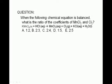Consider the following reaction of potassium permanganate with hydrochloric acid: potassium permanganate plus hydrochloric acid yields manganese 2 chloride plus chlorine gas plus potassium chloride and water. When the chemical equation is balanced, what is the ratio of the coefficients of manganese 2 chloride and chlorine gas? Is it A, 1 to 2; B, 2 to 3; C, 2 to 4; D, 1 to 5; or E, 2 to 5?